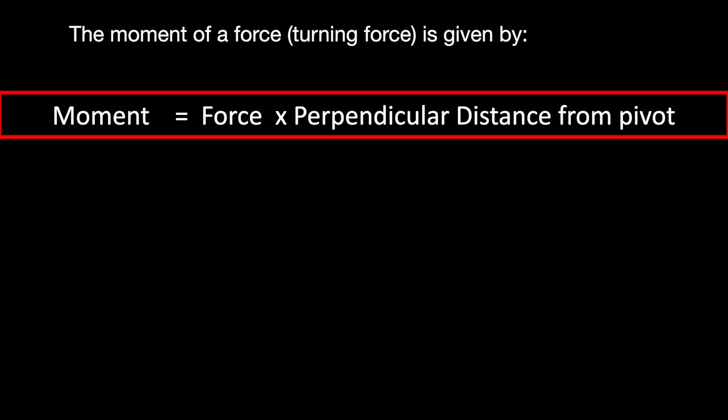So, the moment of a force, or the turning force, is given by this equation. Moment equals force times perpendicular distance from the pivot. The key word at GCSE to remember is that this is essentially just distance. Further on in your physics journey, the fact that it's a perpendicular distance will become more important. But at this level, just know it's distance.